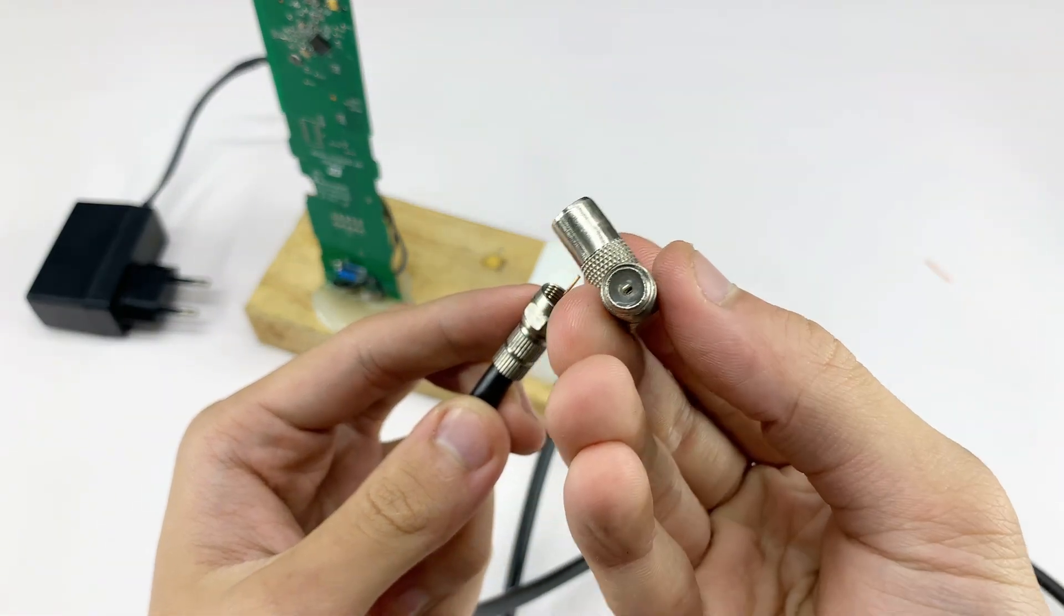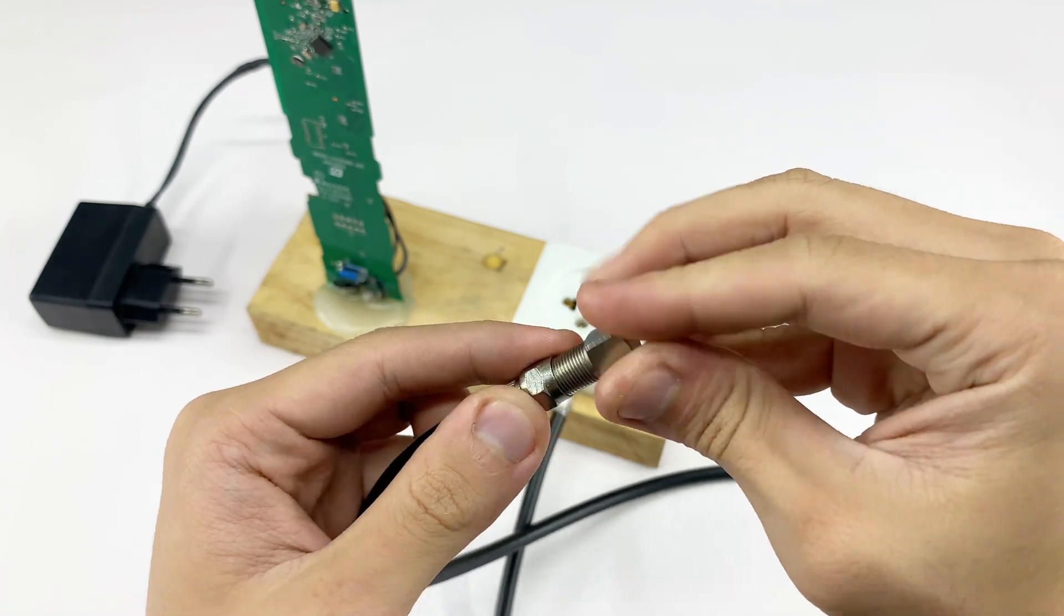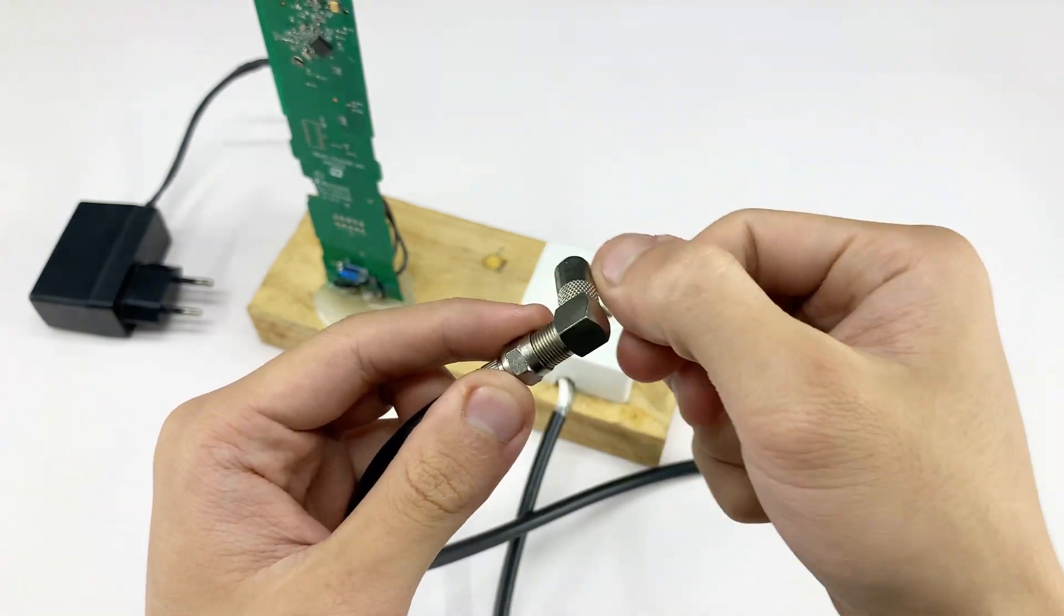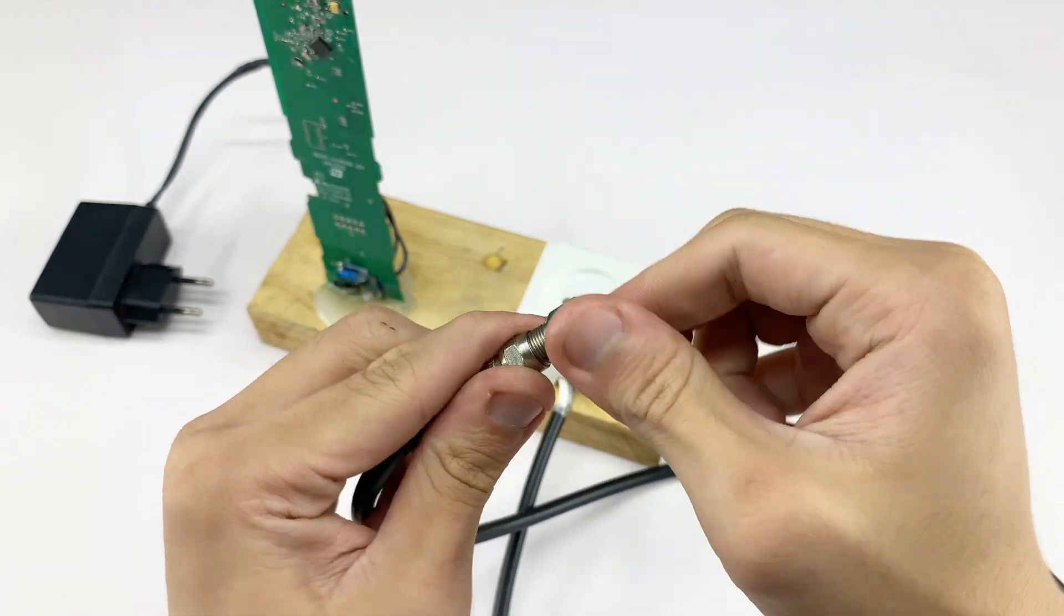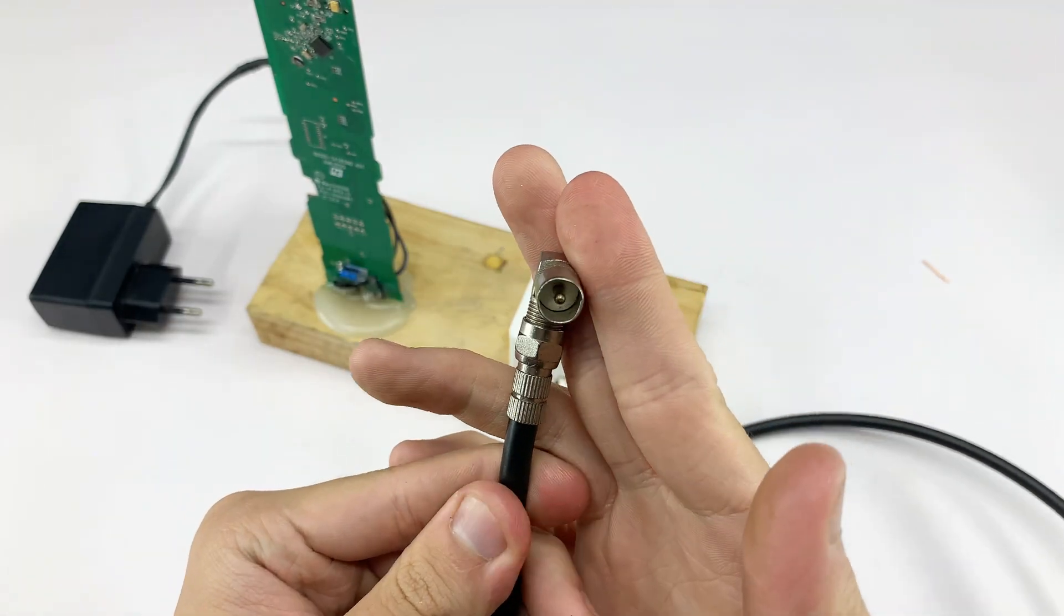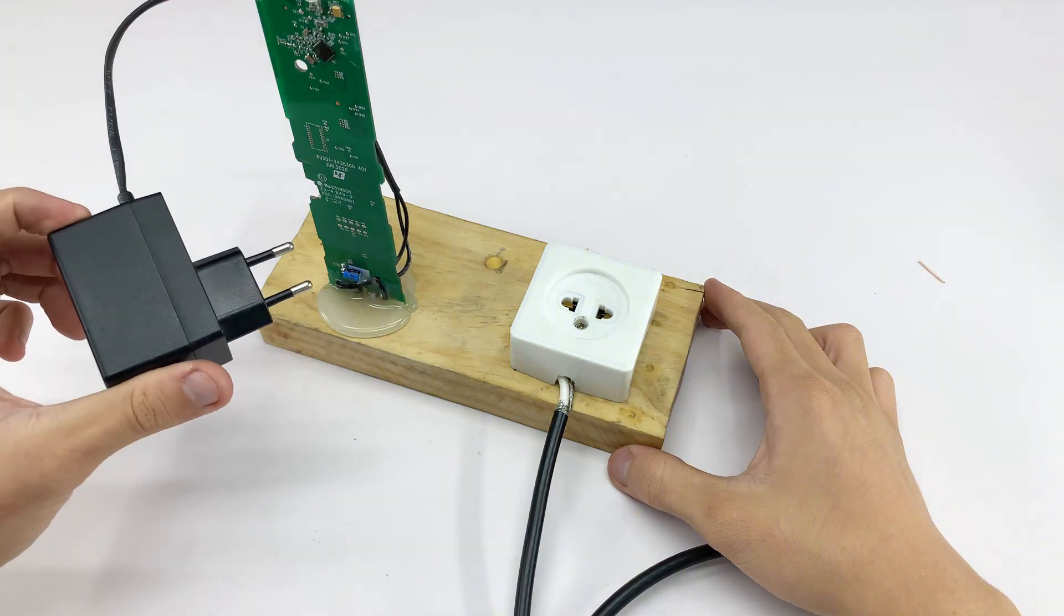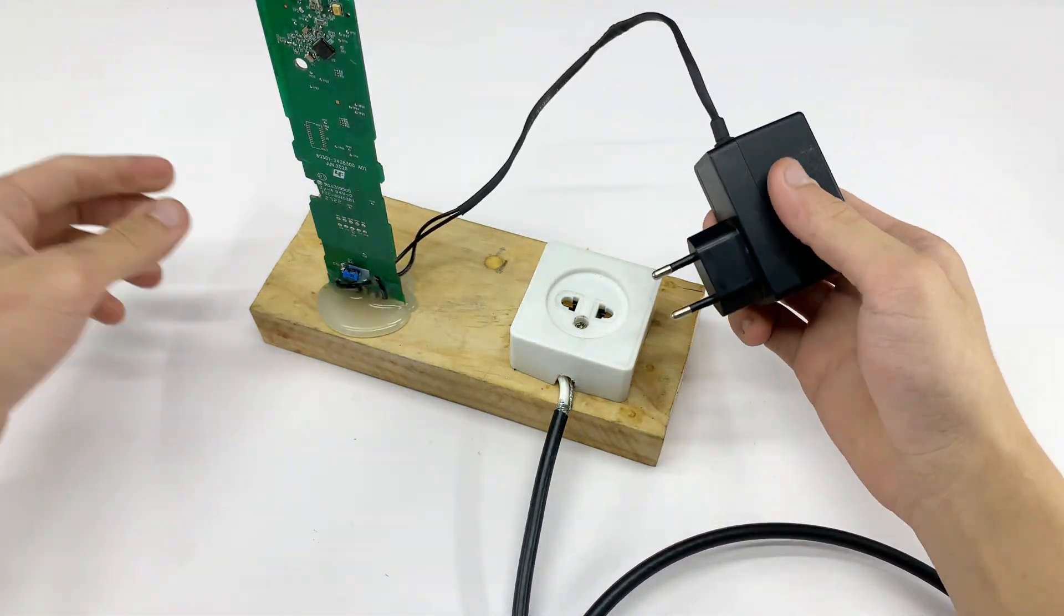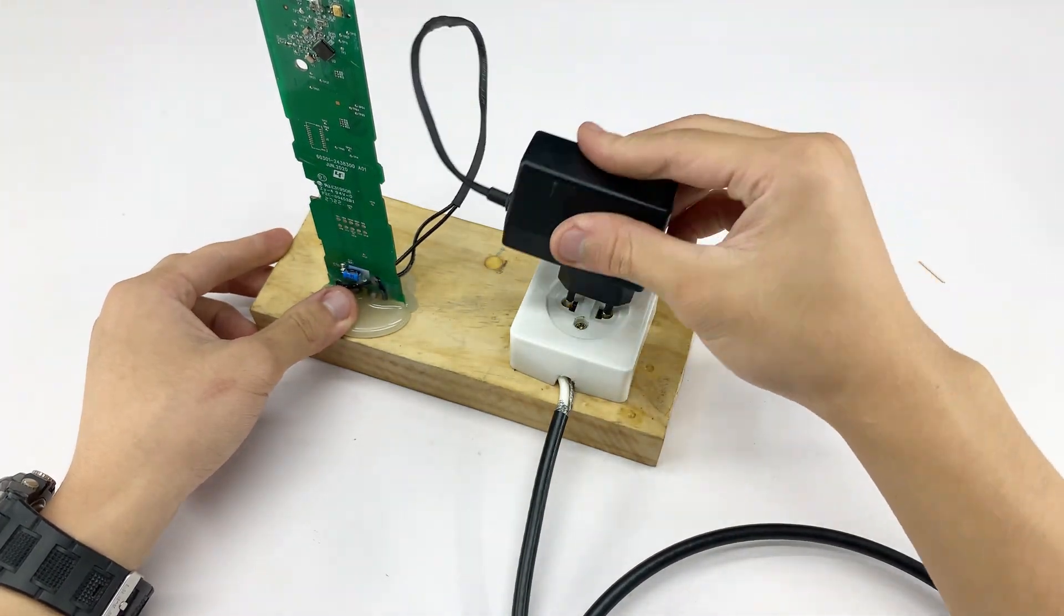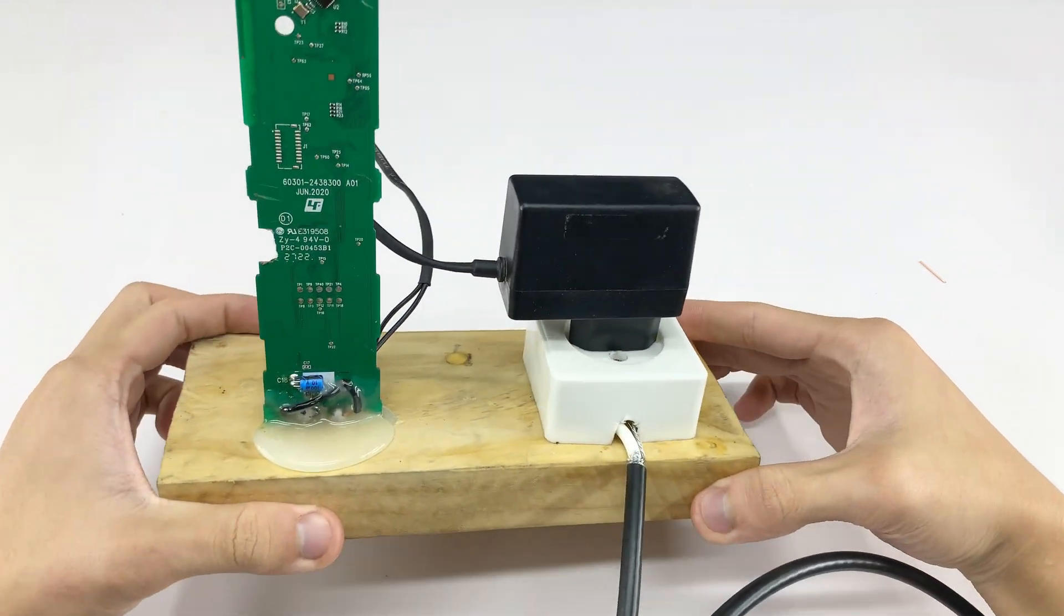Then, I'm screwing on an angled coaxial adapter to complete our custom antenna cable. I will connect this standard power adapter to the homemade power outlet on the wooden base. This completes the electrical path for our antenna.